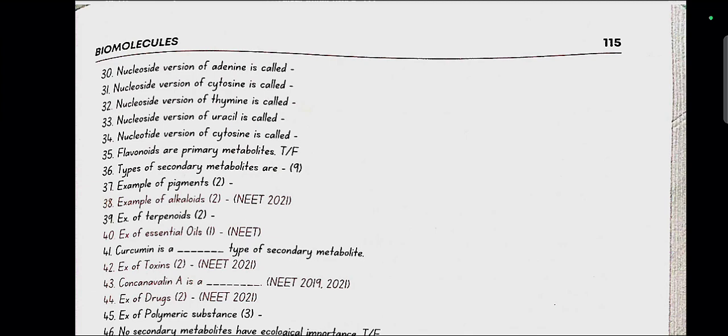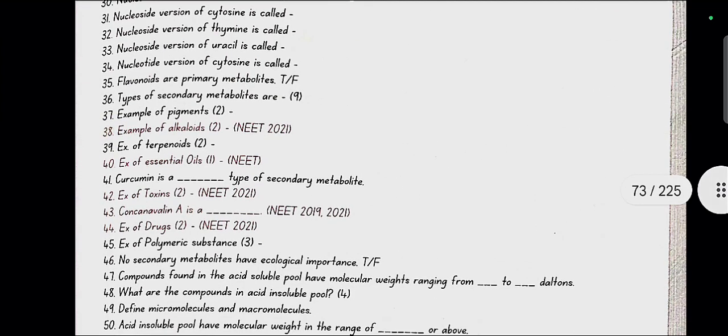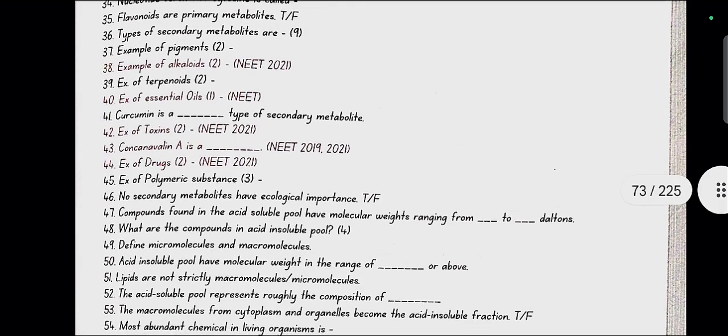Examples of pigments: carotenoids and anthocyanins. Example of alkaloids: morphine or codeine. Example of terpenoids: monoterpenes and diterpenes. Example of essential oils: lemongrass oil. Curcumin is a drug type of secondary metabolite. Example of toxins: abrin and ricin. Concanavalin A is a lectin. Example of polymeric substance: rubber, gums and cellulose.